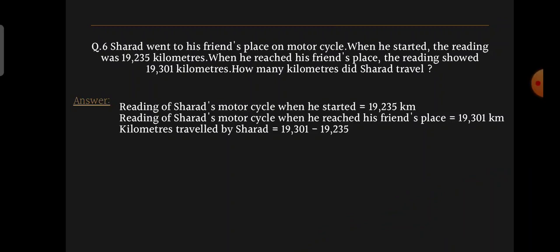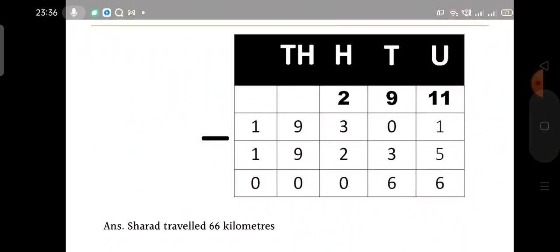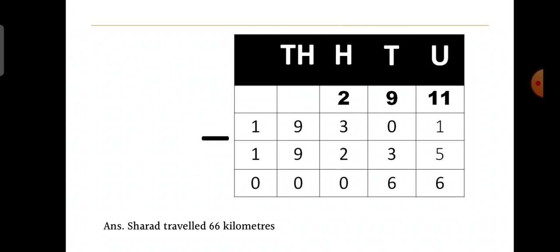Now the sixth sum. Sharat went to his friend's place on a motorcycle. When he started, the reading was 19,235 kilometers; when he reached his friend's place it showed 19,301 kilometers. How many kilometers did Sharat travel? We calculate: 19,301 − 19,235. Since 1 < 5 in the units place, we carry over. Working through the subtraction, the answer is 66. Sharat traveled 66 kilometers.